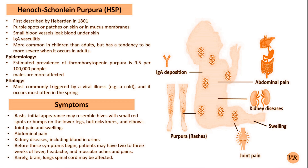Henoch-Schönlein Purpura, that is HSP, was first described by the German physician Adolf Henoch in 1868 and later by the German physician Johan Lucas Schönlein in 1874. Henoch described the clinical features of the condition including the characteristic purpura, while Schönlein provided additional observations and details about the disease. Their combined contributions led to the condition being named in their honor.